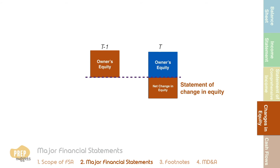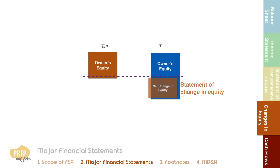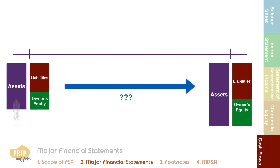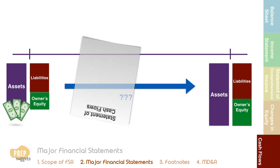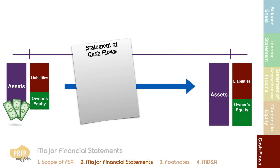One important asset that the company holds is cash. The statement of cash flows links the cash balance from one snapshot to the next. In essence, this statement is a disclosure of the sources and uses of cash, helping creditors and investors evaluate the company's liquidity, volatility, solvency, and financial flexibility.